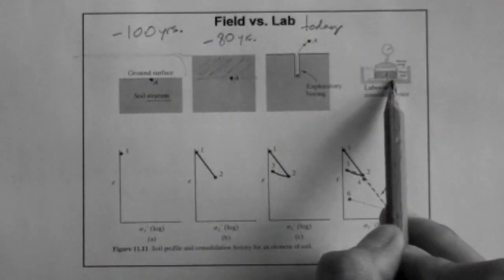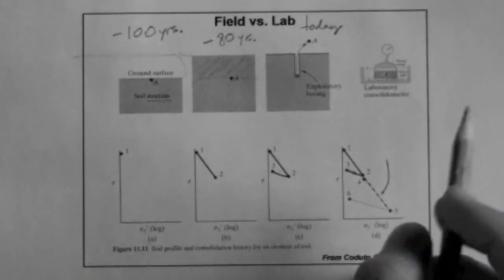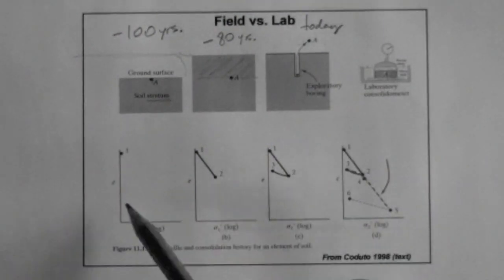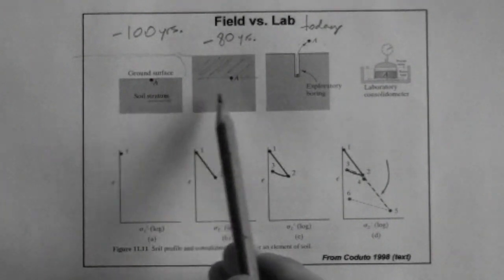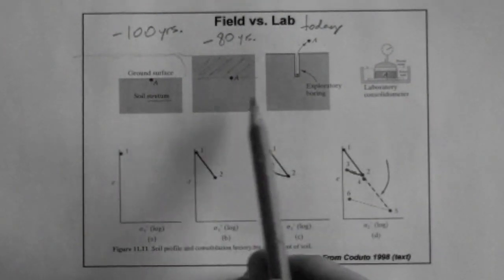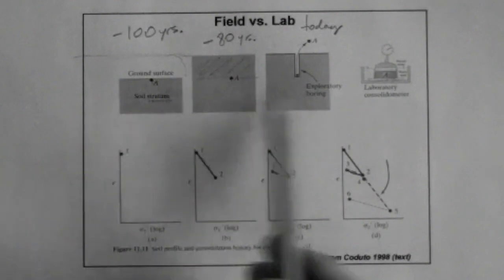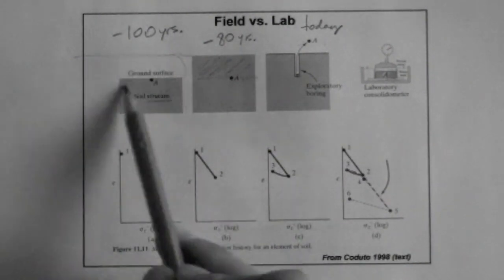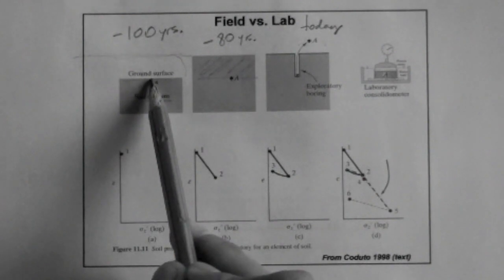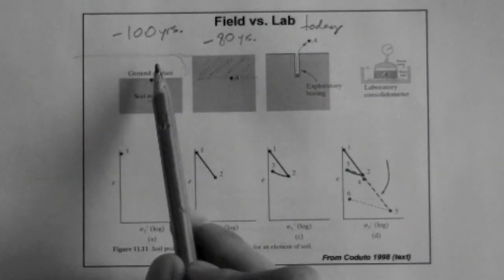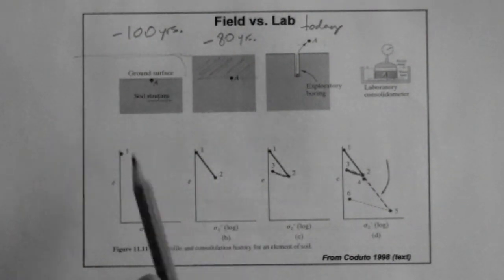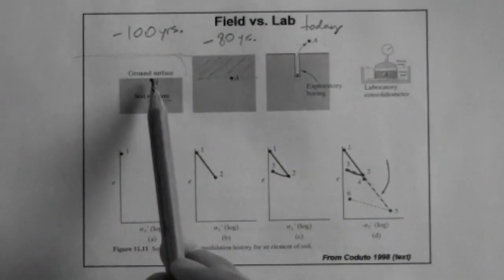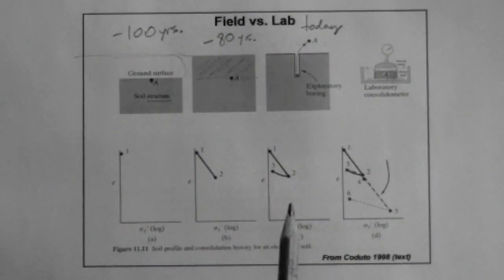So when you take a concrete cylinder to the lab and you want to crush it to determine the strength of the cylinder of the concrete, you're essentially assuming that that concrete cylinder is a point. It's one point inside, for example, a concrete column. So that's kind of interesting. The whole specimen mimics or is meant to mimic a point, even though it has a specific size.